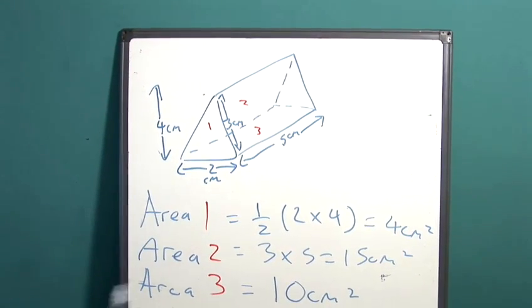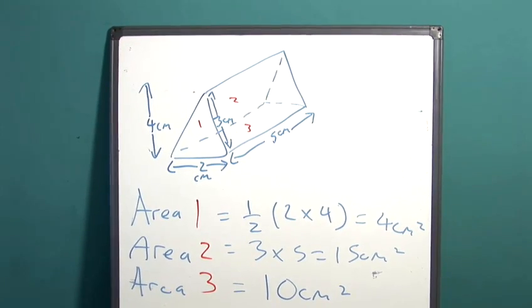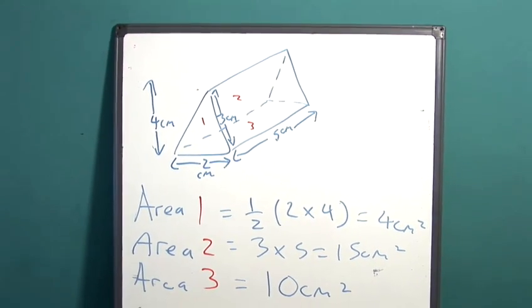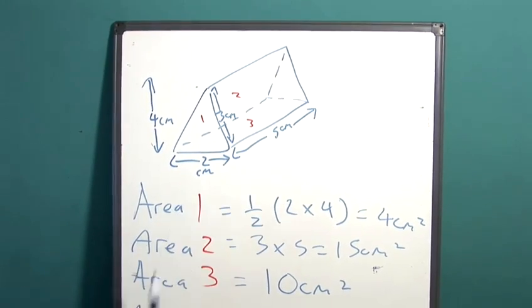We work out the area of one by doing a half times base times height. We work out the area of two by multiplying three and five. We work out the area of three by multiplying two by five.